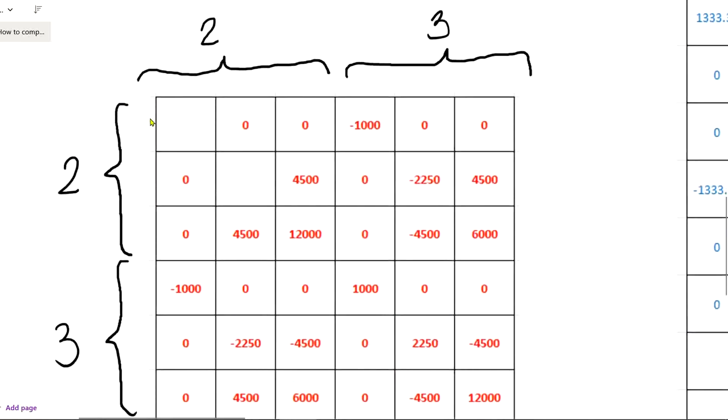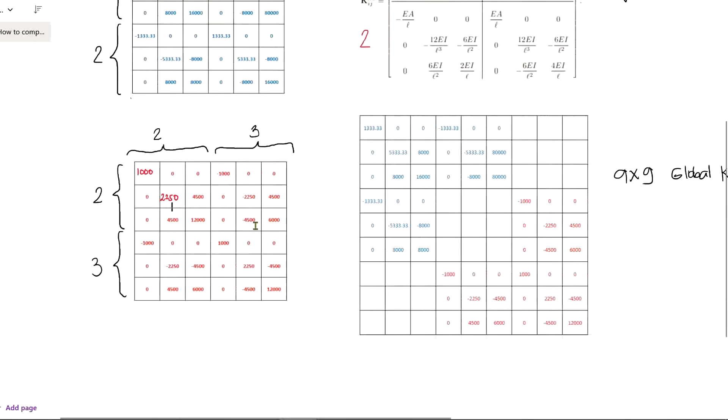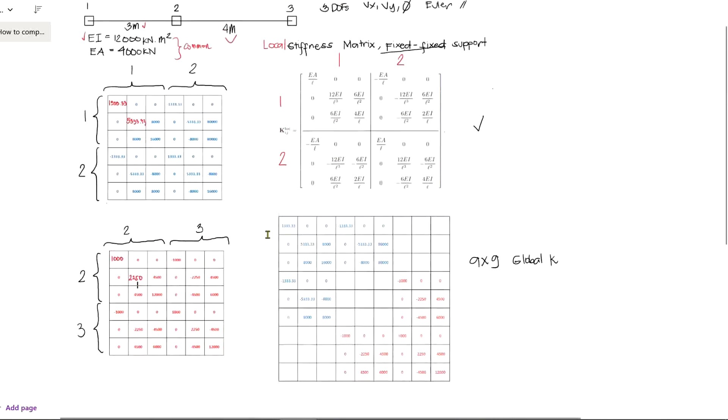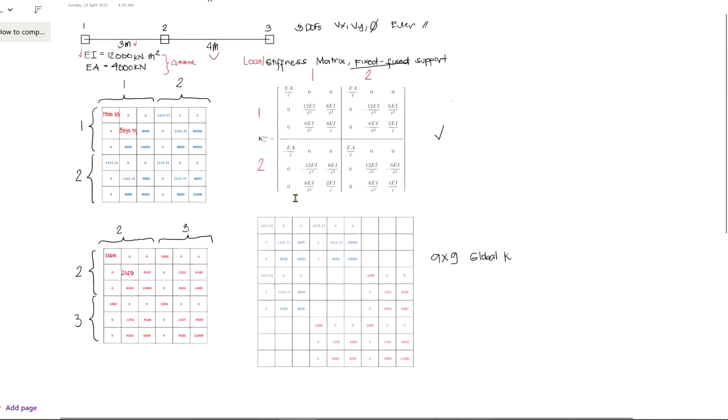This is EA over L, which is 4000 divided by 4, and that is 1000. This is 12EI all over L cubed, which gives 2250.